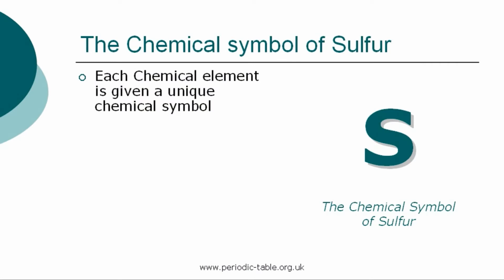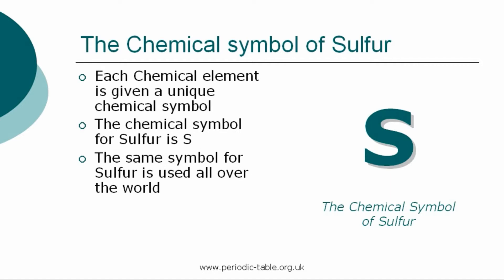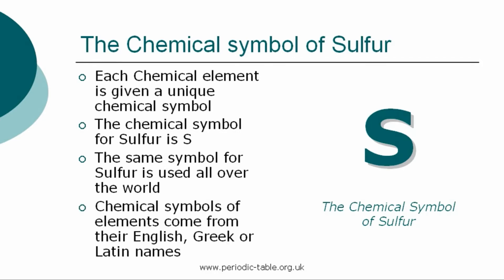Each chemical element is given a unique chemical symbol, which is used all over the world. The chemical symbol for sulfur is S. The chemical symbols of elements come from their English, Greek, or Latin names. The first letter of a symbol is always a capital letter, and if there are any subsequent letters, they are expressed in lower case.